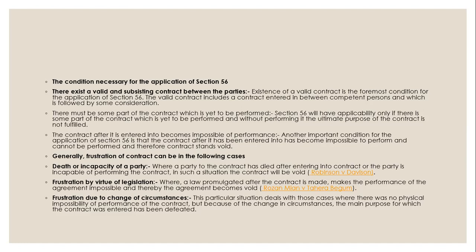Frustration of contract can occur in the following cases. Death or incapacity of a party: where a party to the contract has died after entering into the contract, or the party is incapable of performing the contract, the contract will be void. Frustration by virtue of legislation: where a law promulgated after the contract is made renders performance of the agreement impossible, the agreement becomes void.